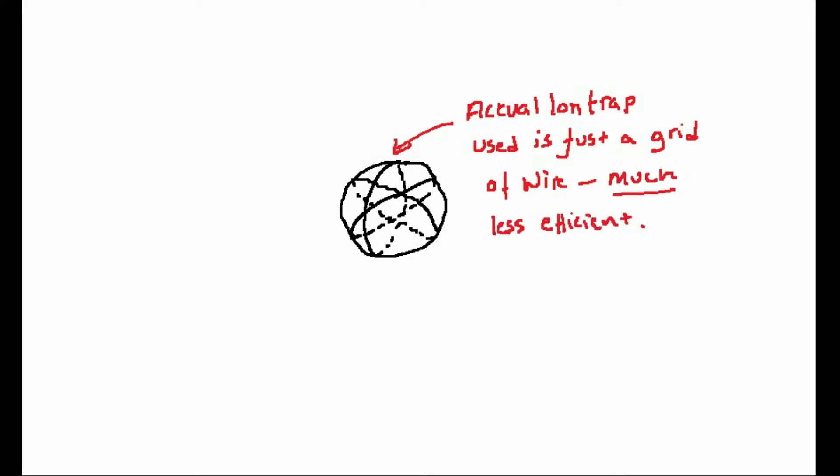A second big issue with current fuser designs is the recirculation of accelerated ions through the machine. Because the density of ions at the centre is so low, most accelerated ions pass straight through without fusing. These ions are slowed down and recirculated through the centre again by the grids around the machine periphery.